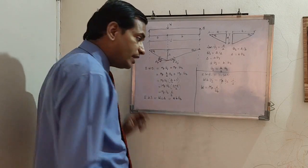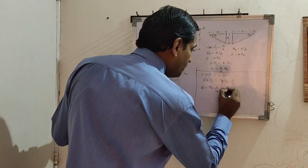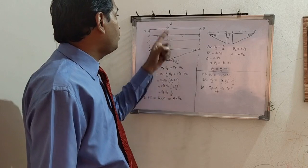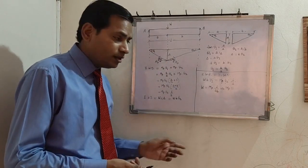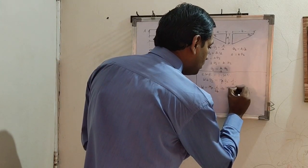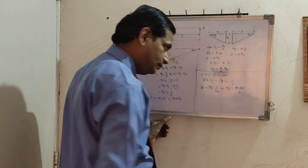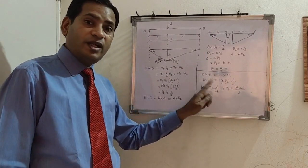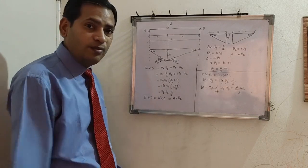So we can write W equals MP times L upon AB. If you are asked to find the plastic moment, you rewrite this as MP equals W times A times B upon L. We are going to get the same result as the elastic moment — the moment value will be the same, only its capacity will be greater.